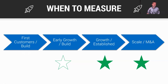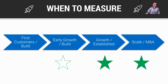When should we start measuring the Rule of 40? I like to think we should start measuring it when we've built out some of the common departments you see in a SaaS company — for example, a services team, customer success team, DevOps team, R&D, sales, and marketing. As you start to formalize the structure within your company and build out these departments, it's a good time to start — somewhere between early growth and established growth.